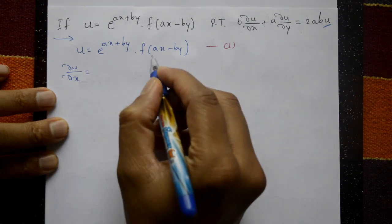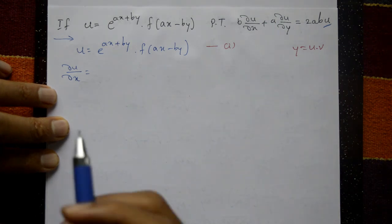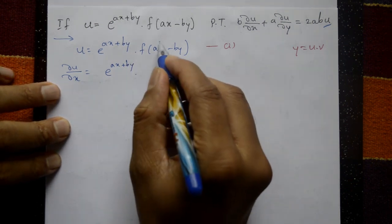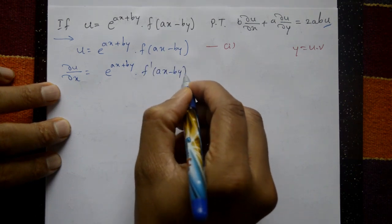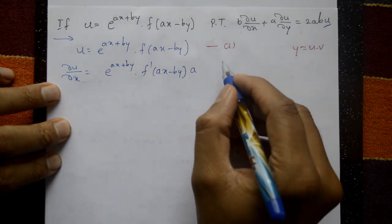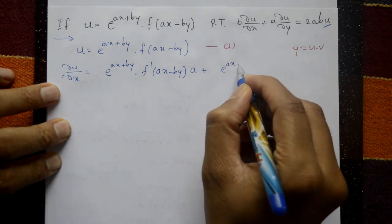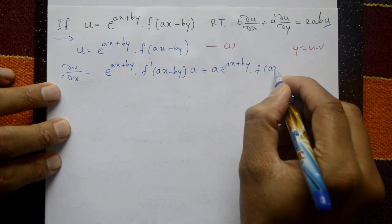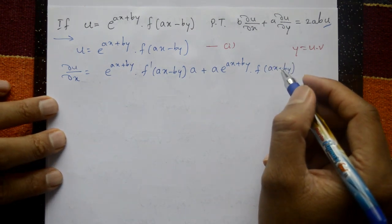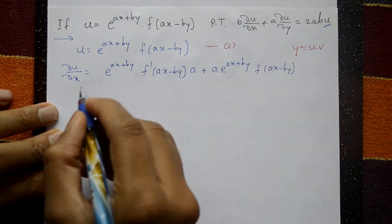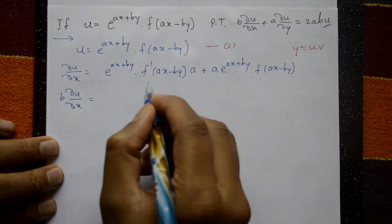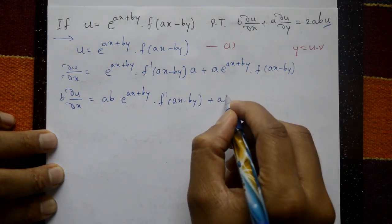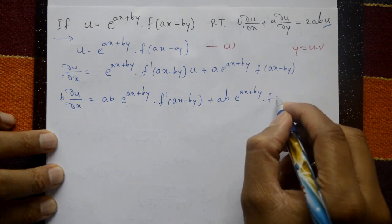Differentiate u with respect to x partially using the product rule. ∂u/∂x equals e^(ax+by) times f′(ax−by) times a, plus e^(ax+by) times a times f(ax−by). Multiplying by b: b·∂u/∂x equals abe^(ax+by)·f′(ax−by) plus abe^(ax+by)·f(ax−by). This is equation number two.